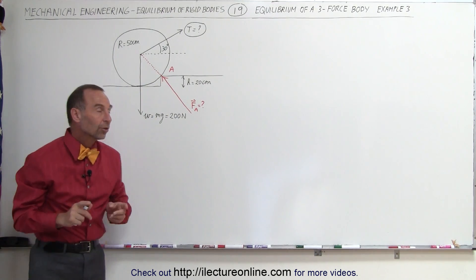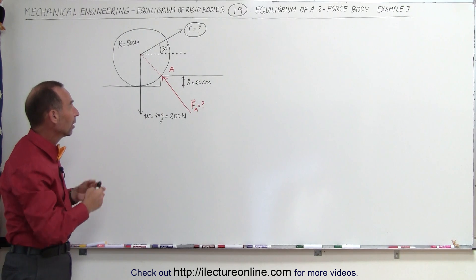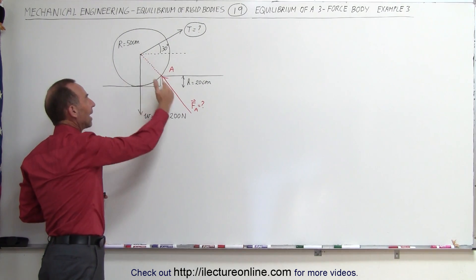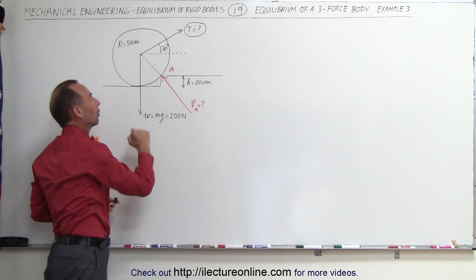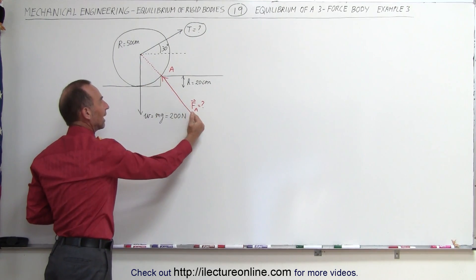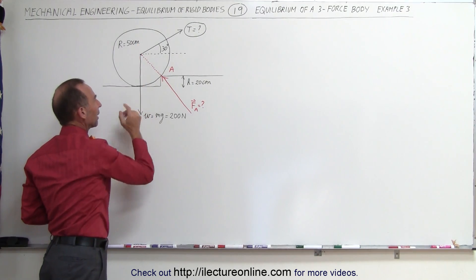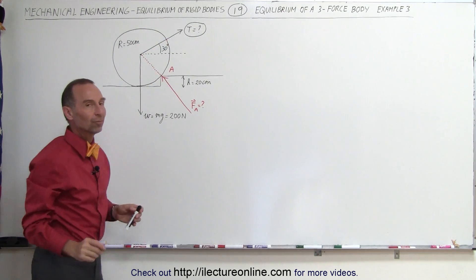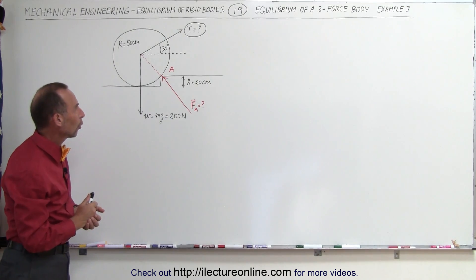When there's a three-force body problem, the line of actions of all three forces need to come down to a single point. That's why we know the direction of the force that acts at A. We know that the direction of the weight is directly downward, and we were given that the tension makes an angle of 30 degrees relative to the horizontal.